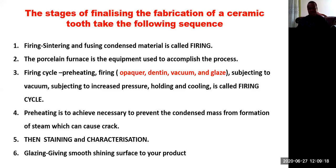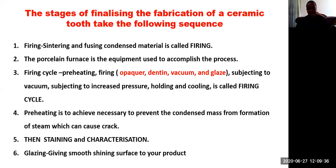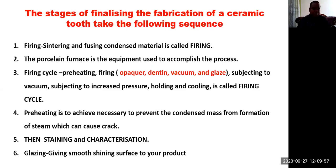Then you do the staining, which is part of characterization — you want to make the restoration look natural, or look exactly like the adjacent tooth, whether it is next to a natural tooth on a bridge or next to a crown in the patient's mouth. Once characterization and staining are achieved, the job is placed and you get a finer product.